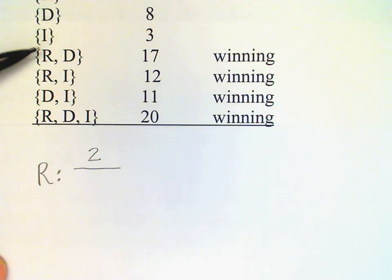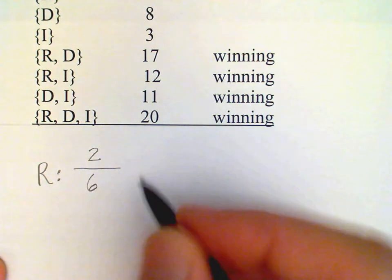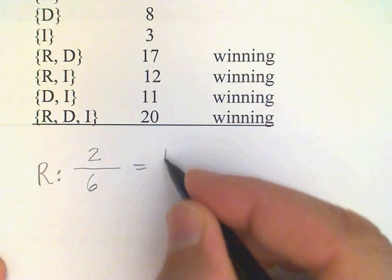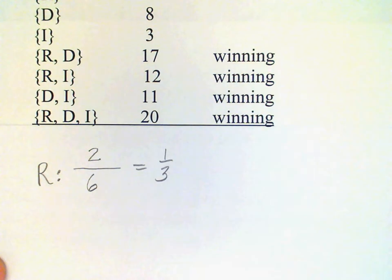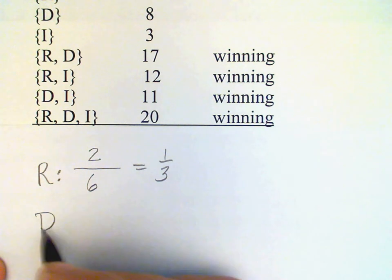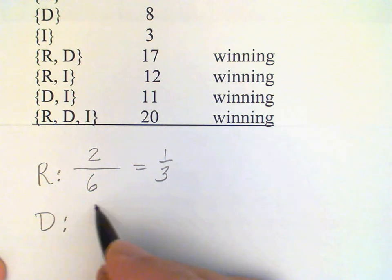R and D here, R and I here, and D and I there gives us a total of six. So for R, we have a power index of one-third, and it's actually exactly the same for D and for I.